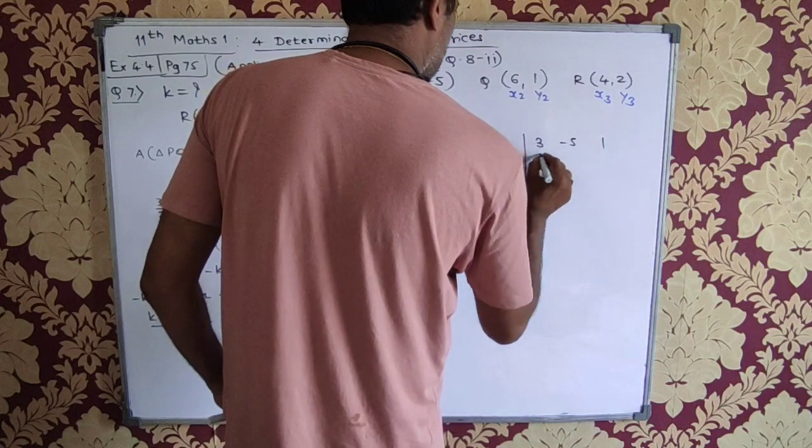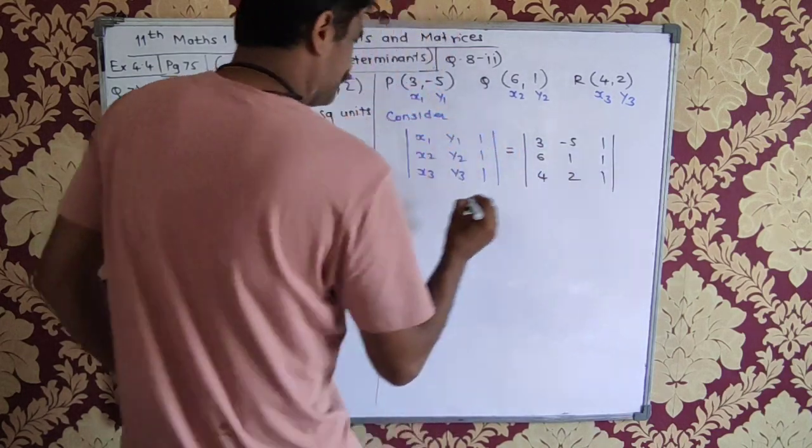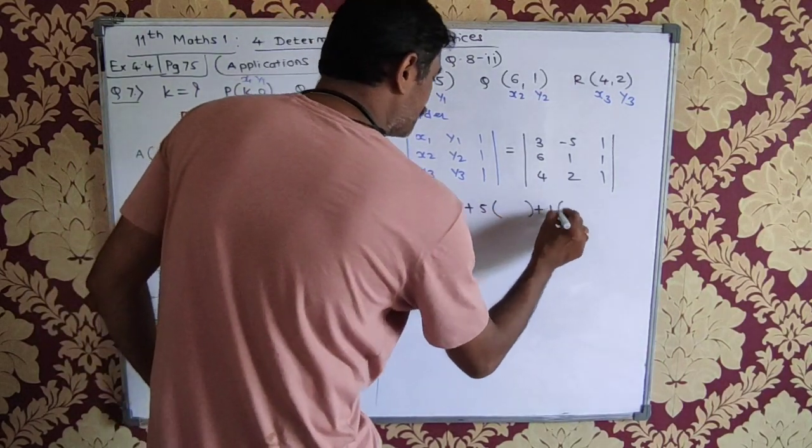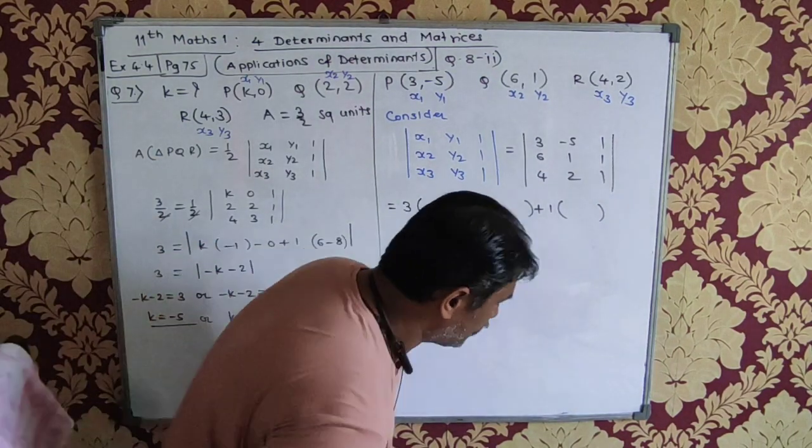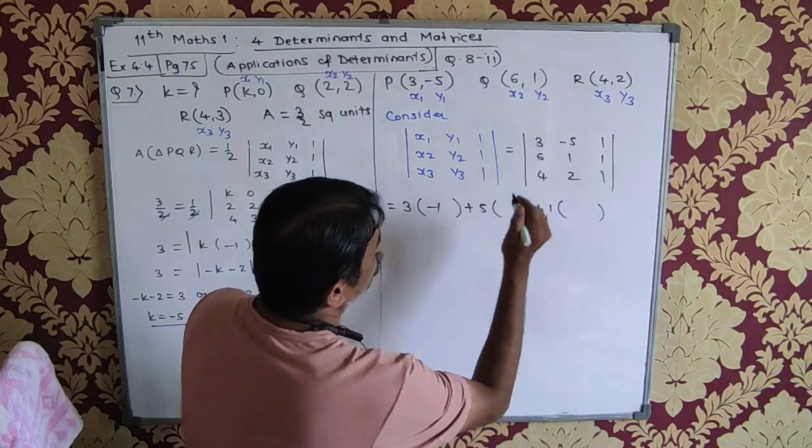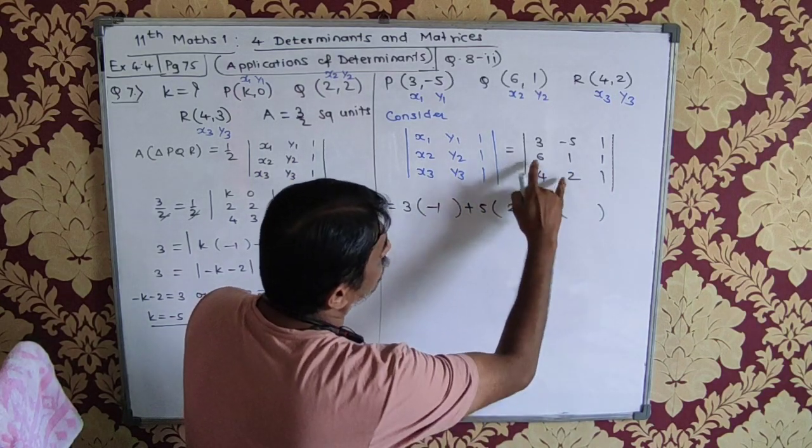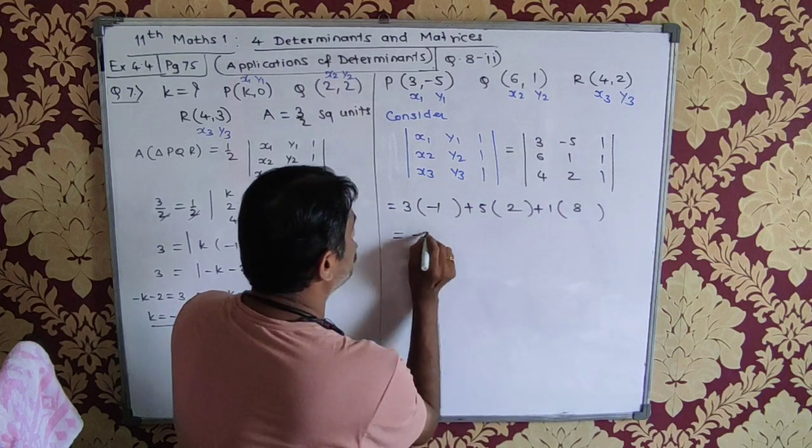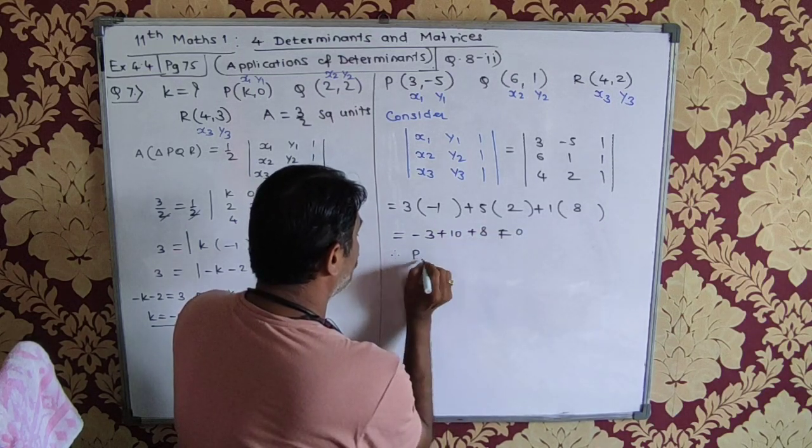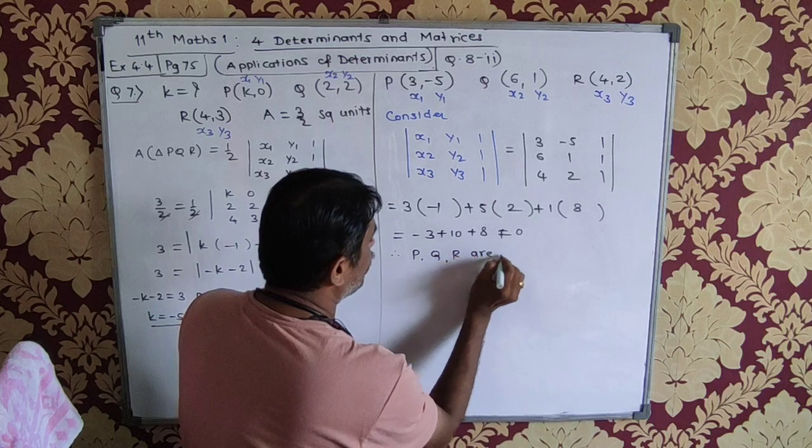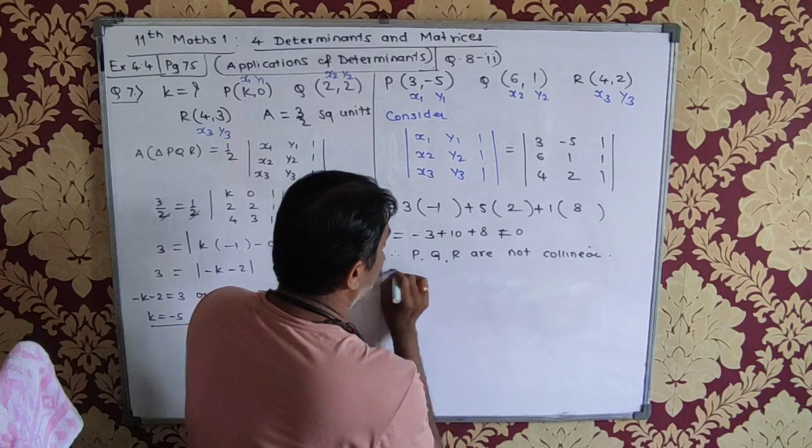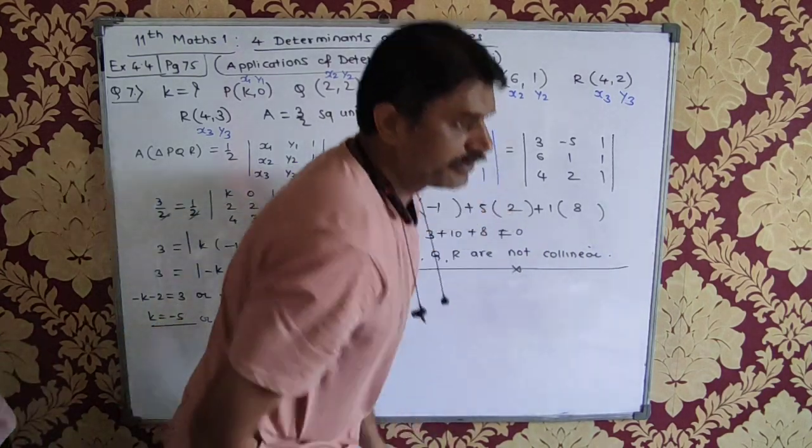So let us substitute the values here. This is 3, minus 5, 1, 6, 1, 1, 4, 2, 1. That is equal to 3 into 1 minus 2 is minus 1, plus 5 into 6 minus 4 is 2, plus 1 into 12 minus 4 is 8. So this is minus 3 plus 10 plus 8, which is not equal to 0. Therefore, P, Q and R are not collinear.